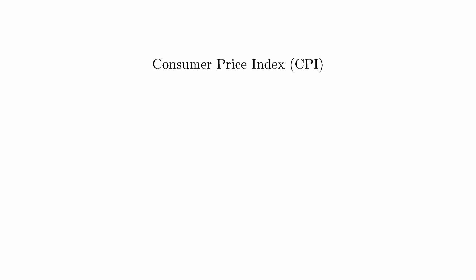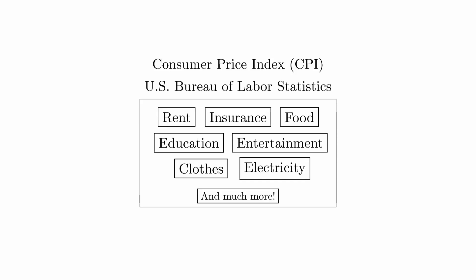One way that inflation is measured is through the Consumer Price Index, or CPI. The most intuitive way to understand this is that the U.S. Bureau of Labor Statistics creates a list of goods and services that the average consumer purchases, and then measures how much it would cost to make those purchases. This list is called the CPI Market Basket, and you can imagine the CPI as measuring how much you spend at checkout to buy that basket of goods.